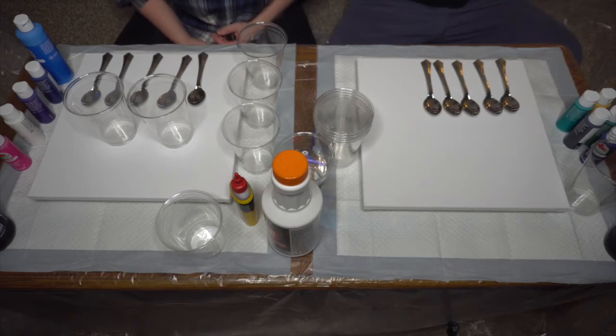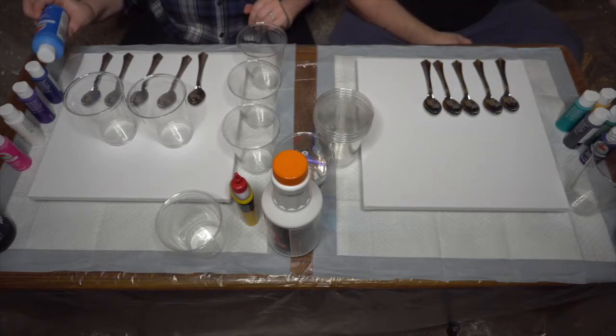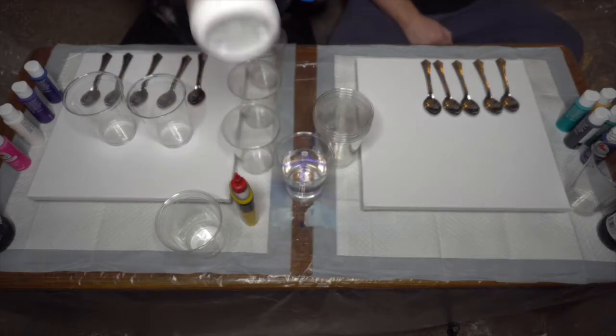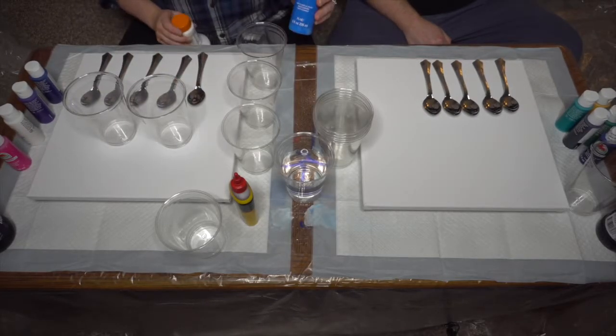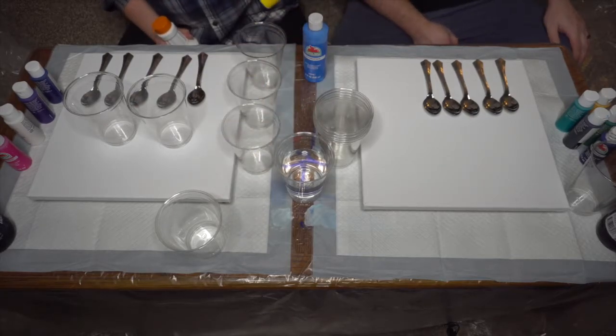Okay, so I have no idea how to mix this. I just heard that you do about equal parts of the Floetrol and paint, and then a splash of water and a three-second squirt of silicone.